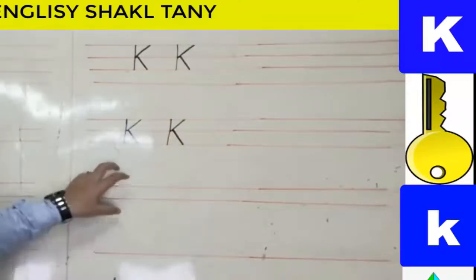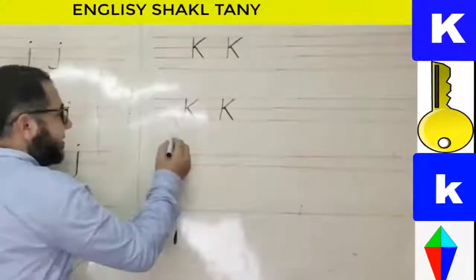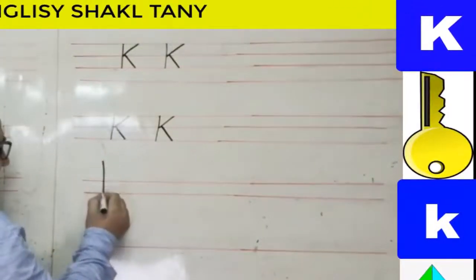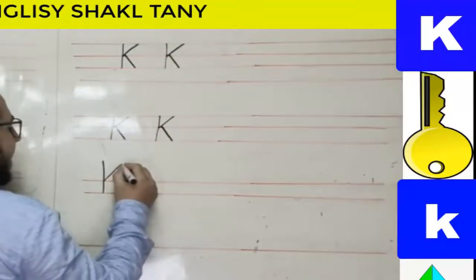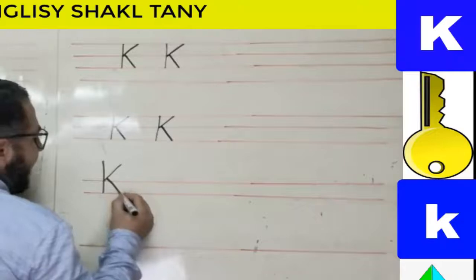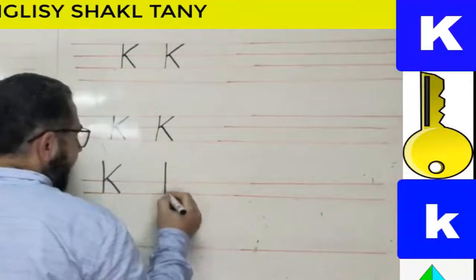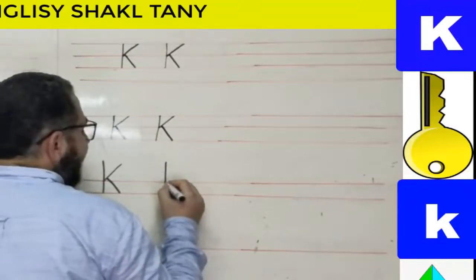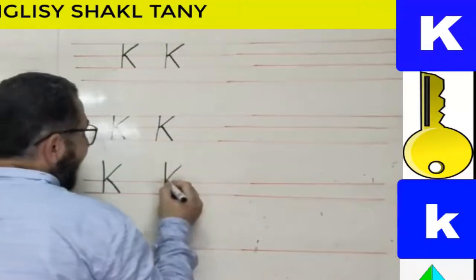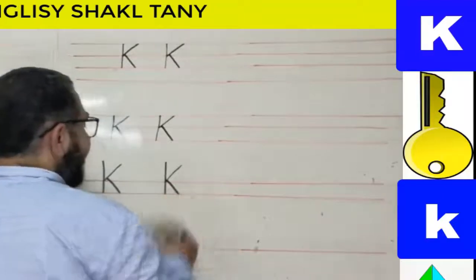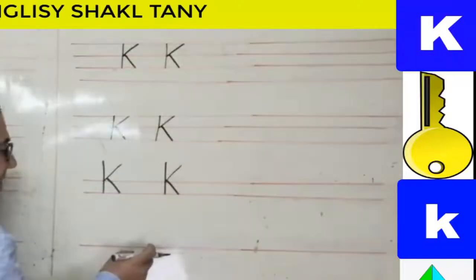When writing uppercase K on two lines, I start above the two lines, go down to the second line, then from the first line make a diagonal up and another diagonal line to the bottom. Again: from the top go down to the second line, then a diagonal up and another diagonal to the bottom. That's K capital.